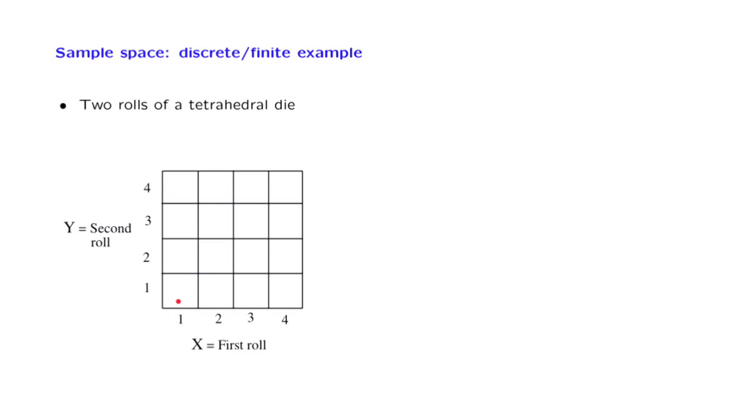For example, if the first roll is 1 and the second is also 1, then this particular outcome has occurred. If the first roll is a 2 and the second is a 3, then this particular outcome occurs. If the first roll is a 3 and then the next one is a 2, then this particular outcome occurs.